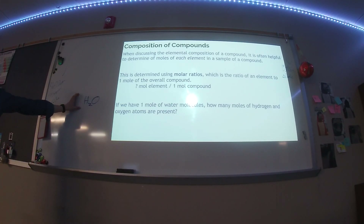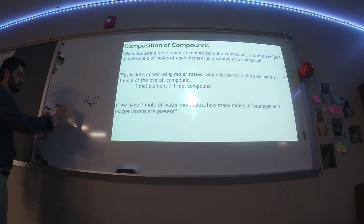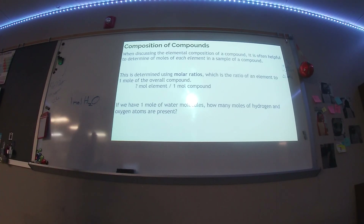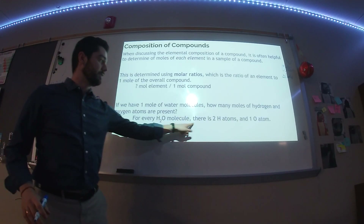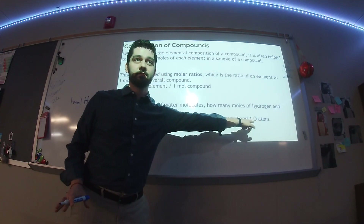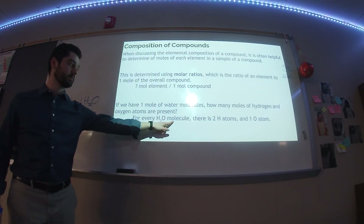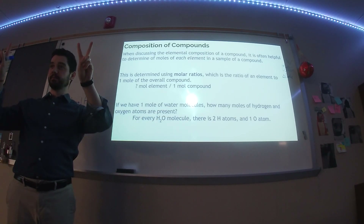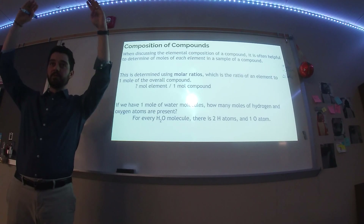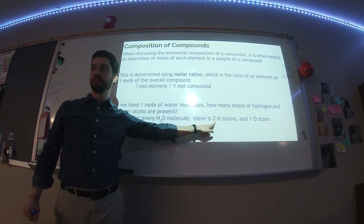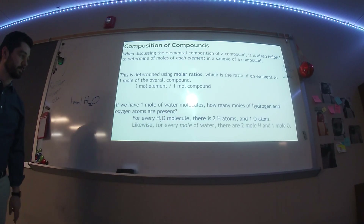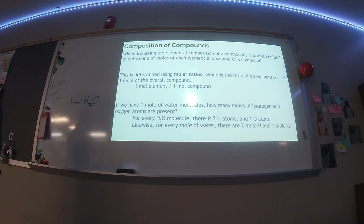Think about a water molecule — I've got a mole of these. Is there like two moles of hydrogen? Yes, now we're getting there. For every molecule, I have two hydrogen atoms and one oxygen atom. If I have a mole of molecules, that means I have twice as many hydrogen atoms and the same number of oxygen atoms. Do we see how that ratio works?